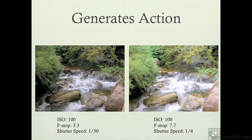That was enough to freeze the action in the water. I wanted that soft, blurred effect on waterfalls. The ISO is the same. The f-stop is down because I've got to use a larger shutter speed, so I have to reduce light somehow. I did it by looking at my light meter, and it said if I used a 7.7, I could go to a shutter speed of one quarter of a second, which produced the image that you see.